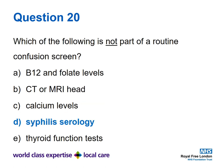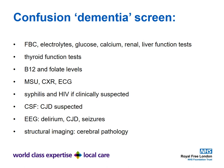Question twenty: which of the following is not part of a routine confusion screen? The answer is D: syphilis serology. All the others are part of the standard screen. A confusion or dementia screen includes haematology, biochemistry, thyroid function tests, B12 and folate, MSU if infection is suspected, chest X-ray, ECG, and syphilis and HIV if clinically suspected. A CSF sample may be taken if Creutzfeldt-Jakob disease is suspected, an EEG if concerned about delirium, new variant CJD, or subclinical seizures, and structural imaging to rule out subdural haematoma, infarctions, and other cerebral pathology.